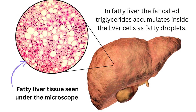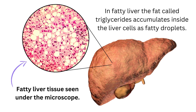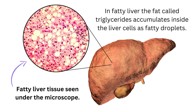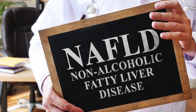What is a fatty liver? Put simply, it's the build-up of excess fat inside and in between the liver cells. Fatty liver is also known as hepatic steatosis. It's normal for the liver to contain some fat, but if fat accounts for more than 10% of the liver's weight, then you have a fatty liver. The fat, called triglycerides, accumulates inside the liver cells as fatty droplets. Very little fat is normally stored in the liver, so this is not an ideal situation.